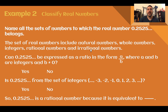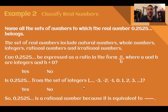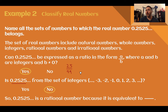Example 2: Name all the sets of numbers to which 0.2525... belongs. We assume it repeats based on the dots and pattern. Can it be expressed as a ratio a over b where a and b are integers and b ≠ 0? Yes — it can be written as 25 over 99. Is it an integer? No, it is not a positive or negative counting number. Therefore, 0.2525... is a rational number, equivalent to 25 over 99, placed outside the inner ovals but inside the rational number box.